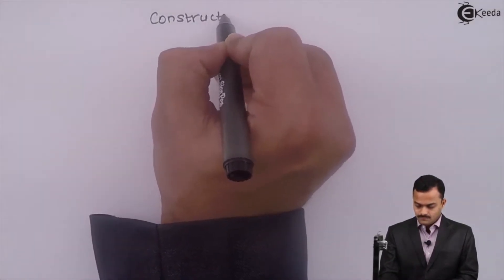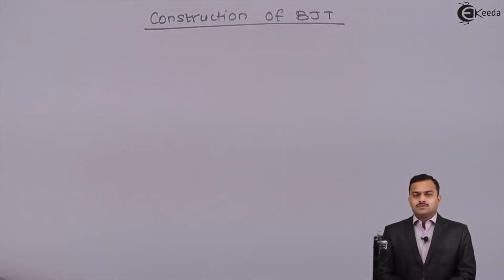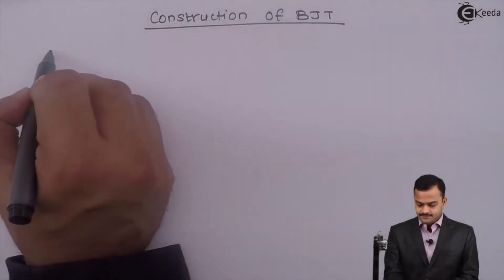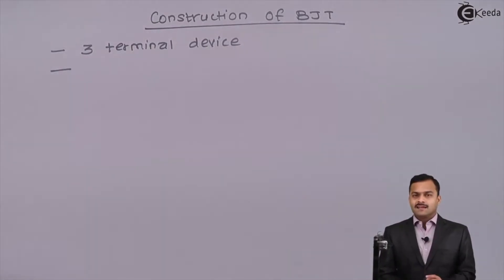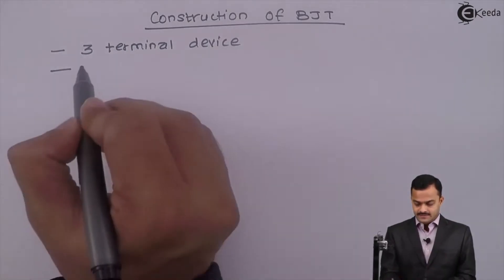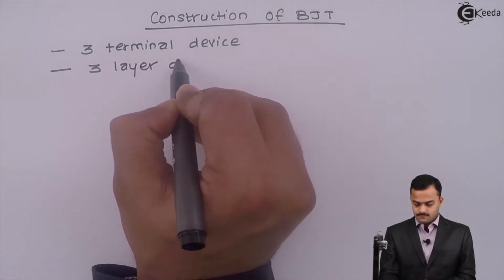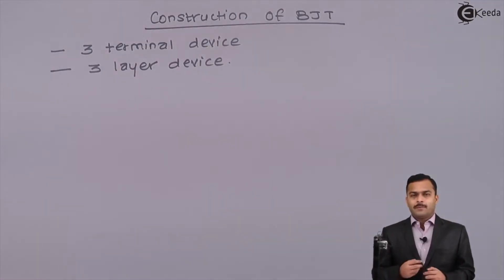Let us discuss construction of BJT. BJT is a three-terminal device. It is a three-layer device. We have P-type, N-type semiconductors. Basically, if I have three layers laid one after the other, then I am getting a three-layer device. Based upon which layer you are putting between other two layers, there are two types of configuration.